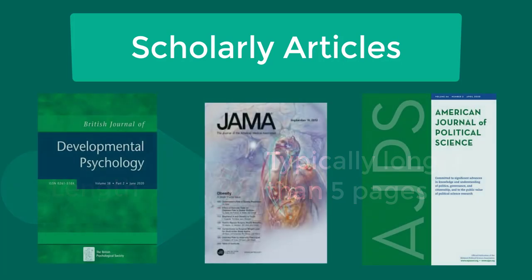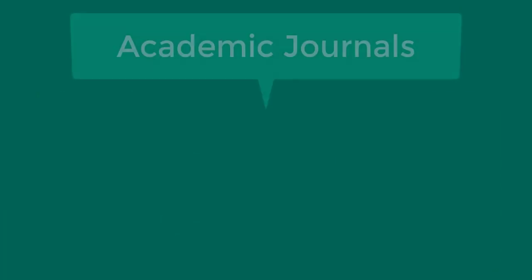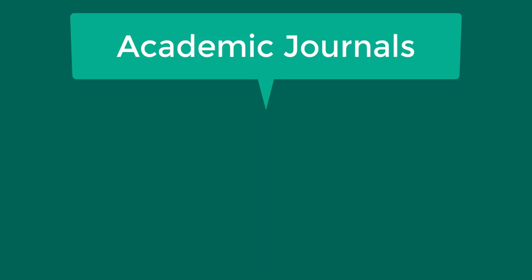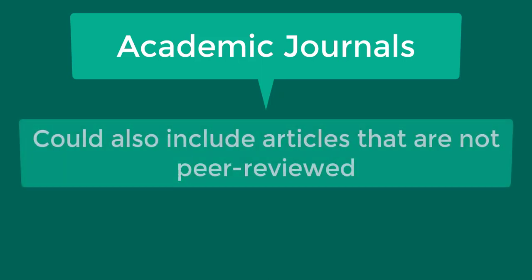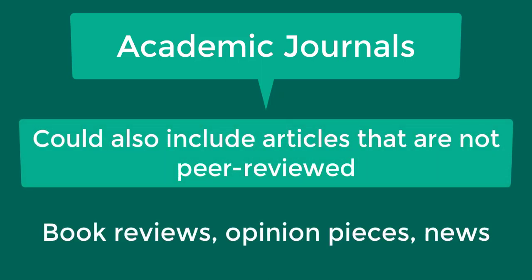Here are some examples of academic journals. While academic journals include peer-reviewed articles that discuss original research, they might also include other types of articles such as book reviews, opinion pieces, and news items, which are not considered to be scholarly articles.